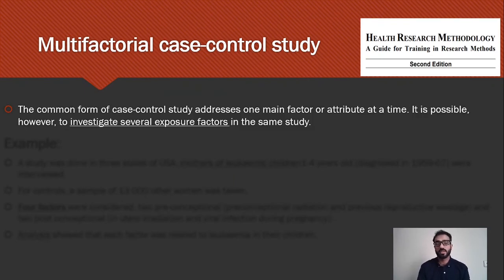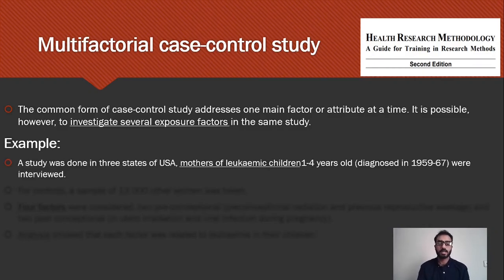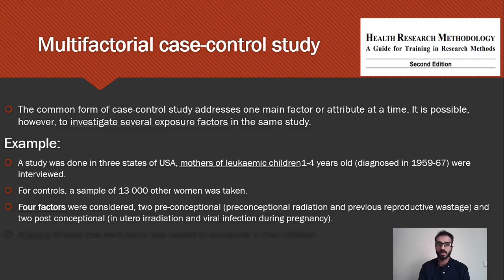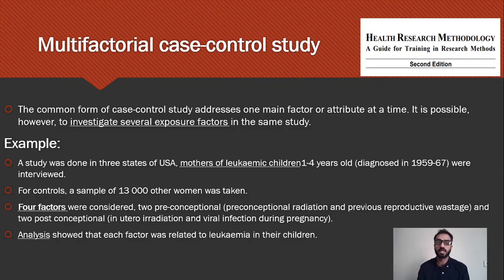Regarding multifactorial case control studies: so far we have seen that we study only one factor related to a disease, but it is possible to investigate multiple etiological factors in the same study. A study was done where mothers of leukemic children aged 1 to 4 years were interviewed, with 13,000 other women with the same history as controls. Four factors were considered: two preconceptional — preconceptional radiation and history of previous reproductive wastage — and two post-conceptional — in utero radiation exposure during pregnancy, and history of viral infection during pregnancy. It was found that all of these factors were contributing to the development of leukemia in children.